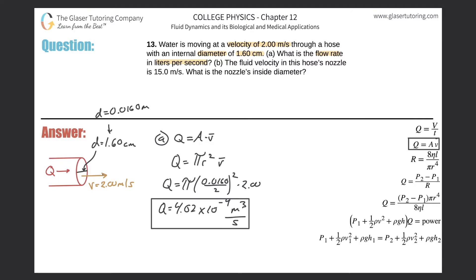So now it says letter B. The fluid velocity in the hose's nozzle is 15 meters per second. What is the nozzle's inside diameter now? So the one assumption that we have to make here is that when we found this, when we found out this volume flow rate, that was flowing through the hose itself. So I'm going to write a little Q sub H.